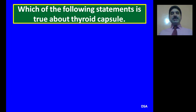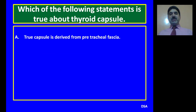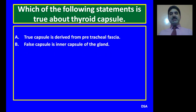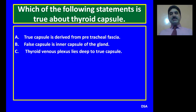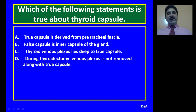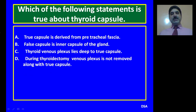Question 2: Which of the following statements is true about the thyroid capsule? A. True capsule is derived from pretracheal fascia. B. False capsule is the inner capsule of the gland. C. Thyroid venous plexuses lie deep to the true capsule. D. During thyroidectomy, venous plexuses are not removed along with the true capsule. C is the correct option.